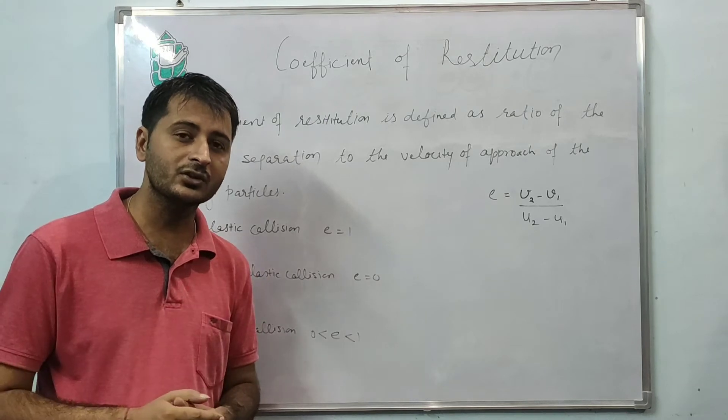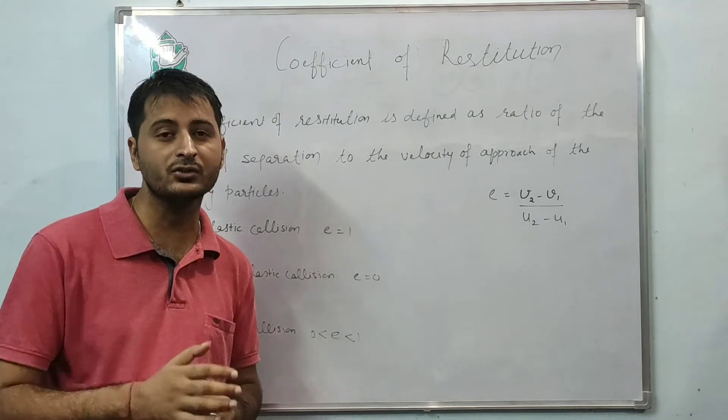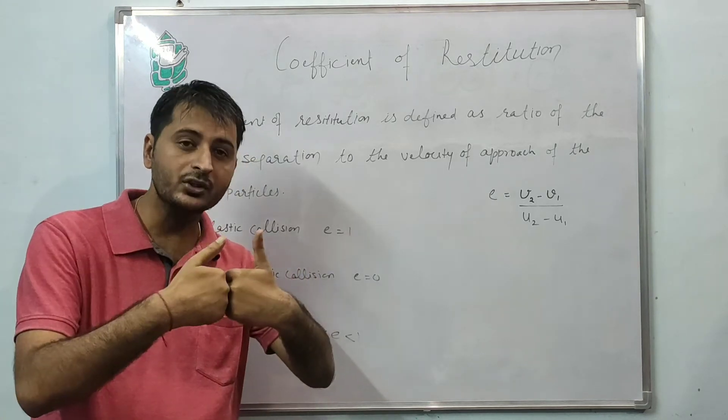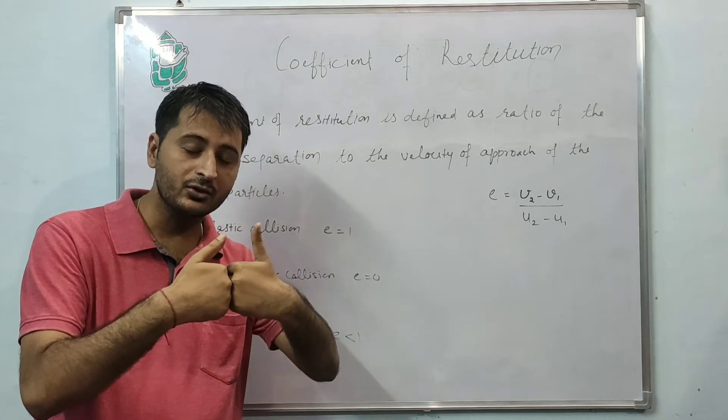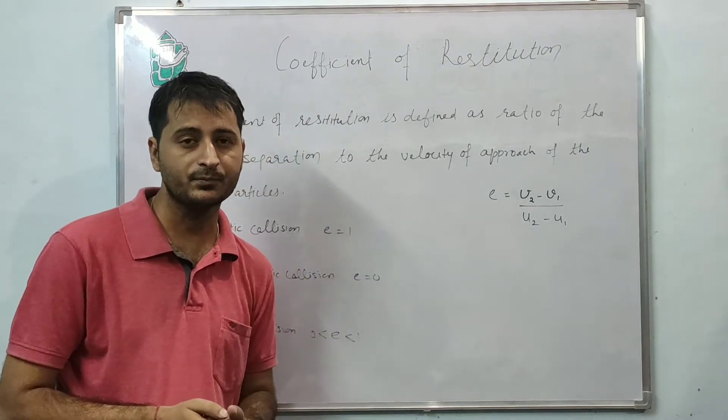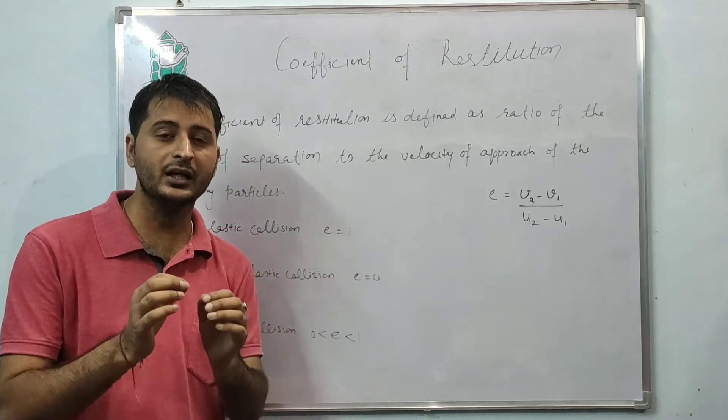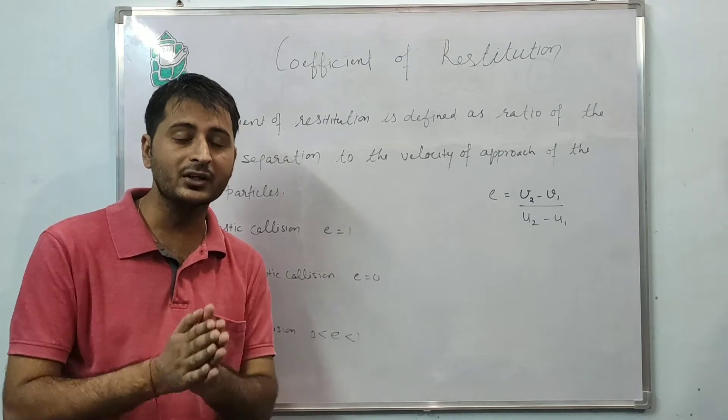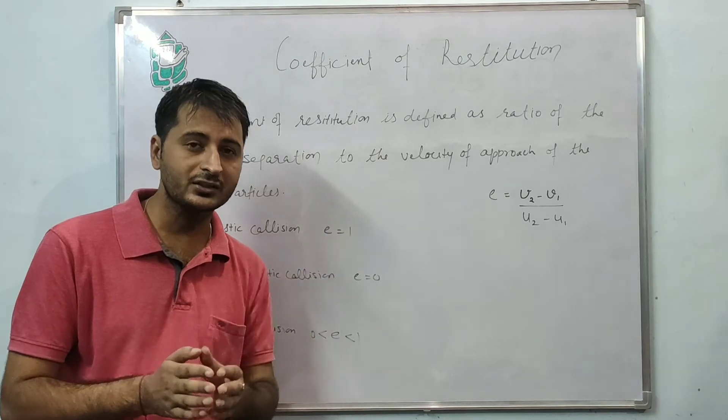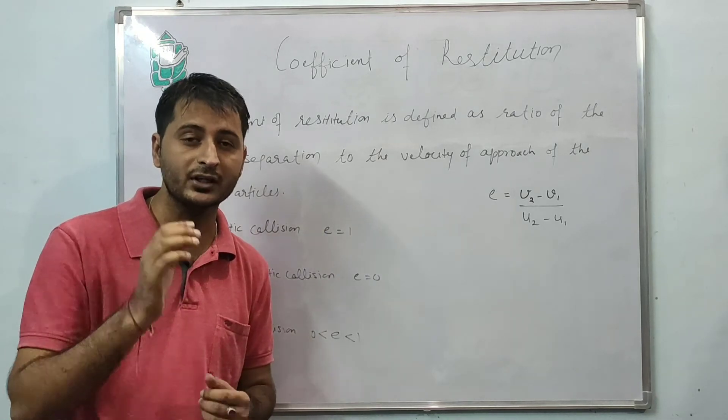Special case is the perfectly inelastic collision, in which collision between two bodies occurs, but during the collision they stick with each other and move with the same velocity. Now how do we define these three collisions? Which is elastic, which is inelastic, and which is perfectly inelastic?